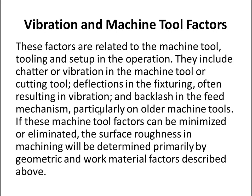Let's talk about vibration and machine tool factors. These factors are related to the machine tool, tooling, and setup in the operation. They include chatter or vibration in the machine tool or cutting tool, deflections in the fixturing often resulting in vibration, and backlash in the feed mechanism — particularly on older machine tools. If these machine tool factors can be minimized or eliminated, the surface roughness in machining will be determined primarily by the geometric and work material factors described above.